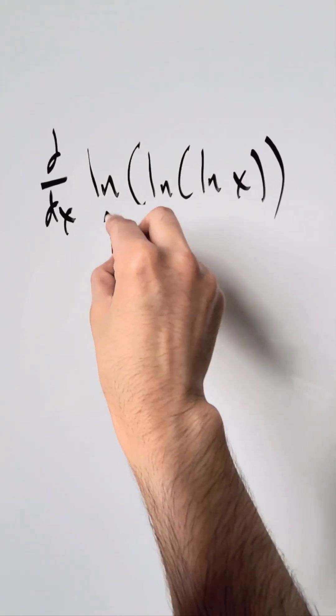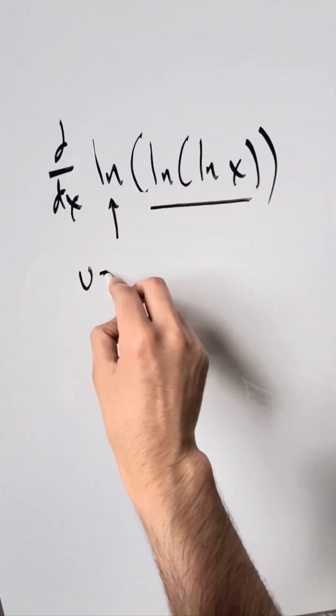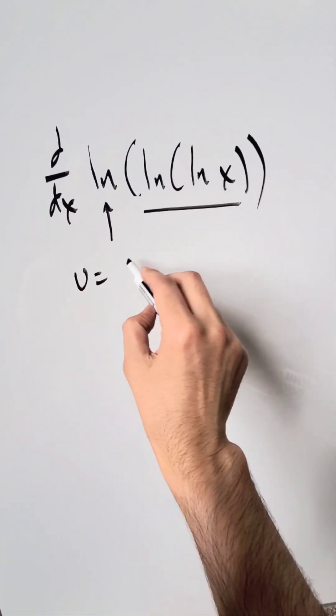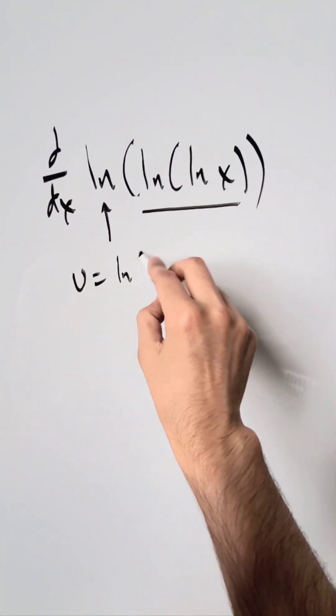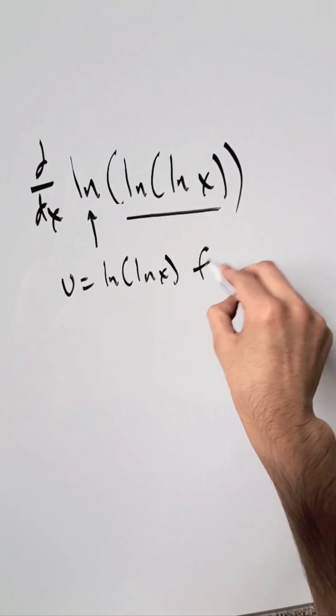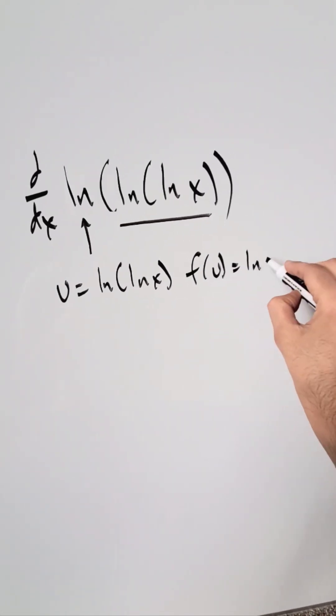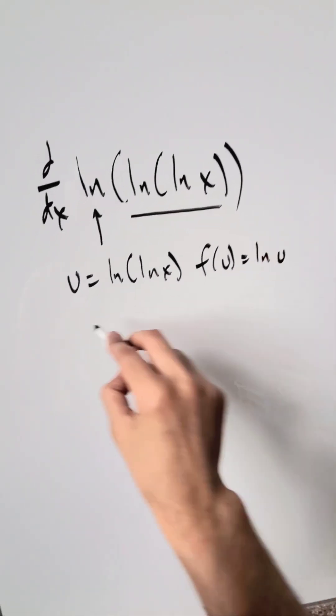You see this natural log over here and the item which is underlying, which comes afterwards — we will do a u substitution. u is equal to natural log of natural log of x. The function with regards to u is equal to natural log of u.